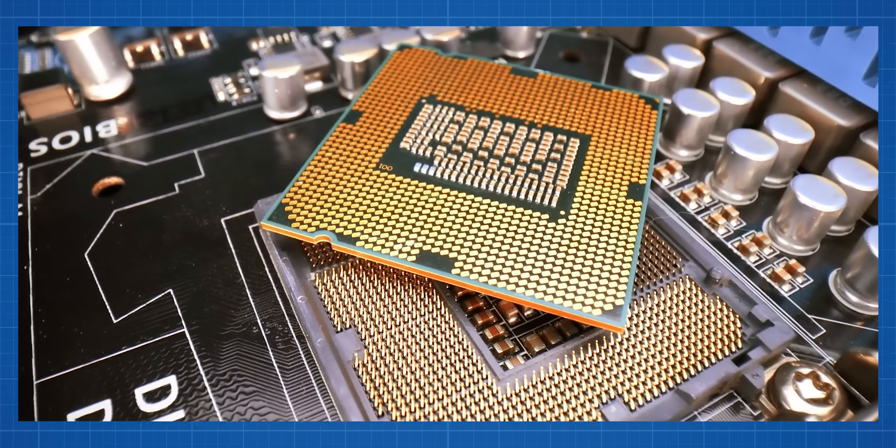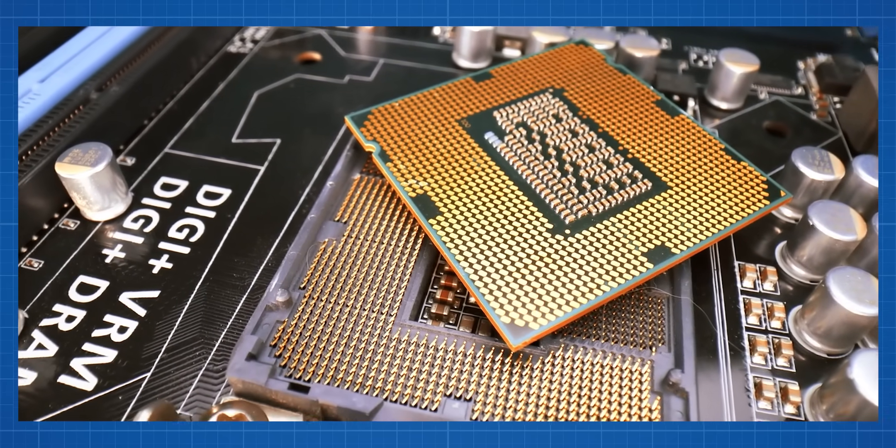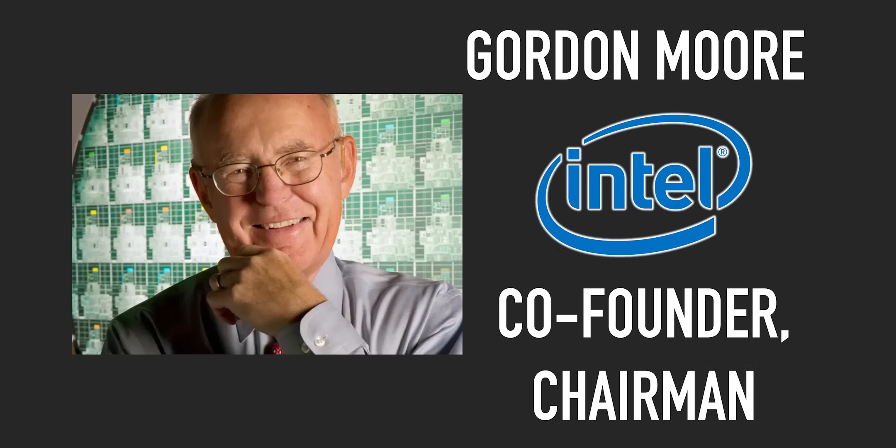Modern CPUs like the Intel Core i9 contain billions of transistors in just a couple square inches. One of the co-founders of Intel, Gordon Moore, actually predicted that the number of transistors on a chip would double roughly every two years.